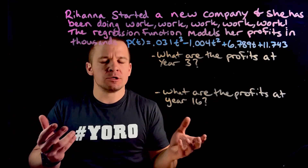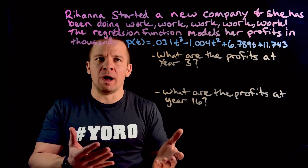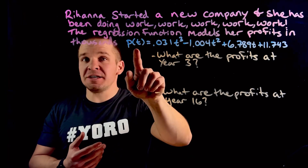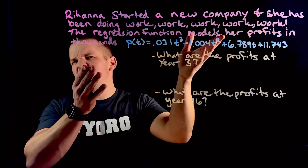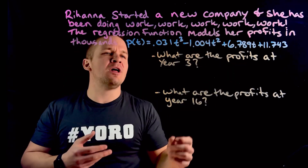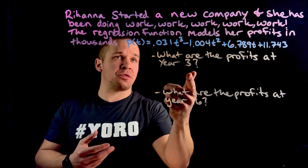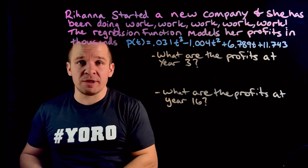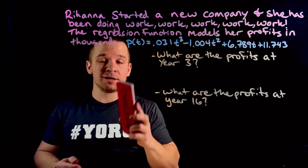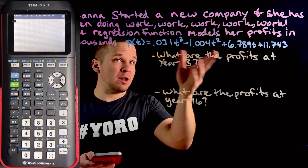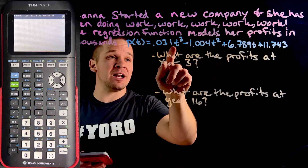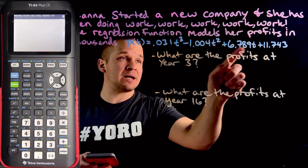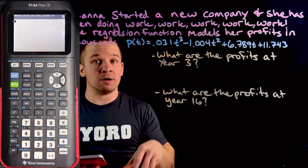All right, pretty simple question. So what do we do? Well, I'm assuming here that T is in years — perhaps I should have written that, it got a little too full. So I'm just going to take three, I'm going to plug it in. Let's do that. I'm just going to take out my TI and plug this bad boy in here.